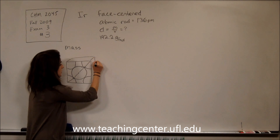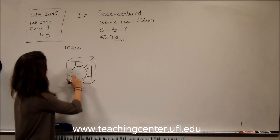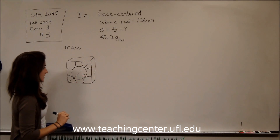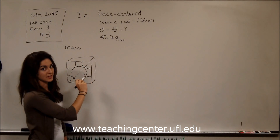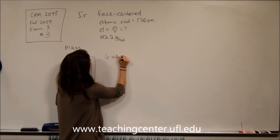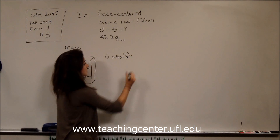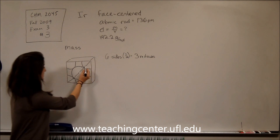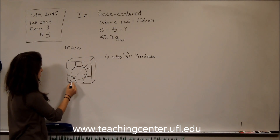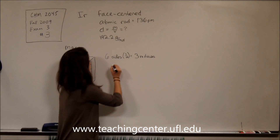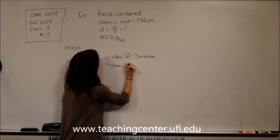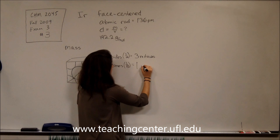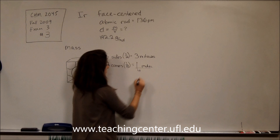To find the mass of this cube, we need to know the number of molecules in it. On each of the six sides there's going to be half of a sphere lined up against the wall. So six sides times one-half gives us three molecules. Now, looking at the corners: we have eight corners, and each one is one-eighth of a sphere. Eight corners times one-eighth gives us one additional molecule. Altogether, we have four molecules in our cube.